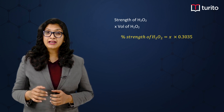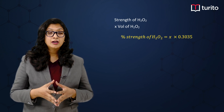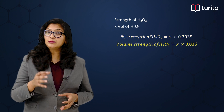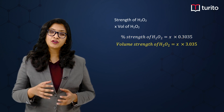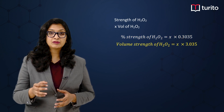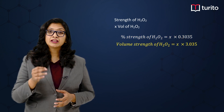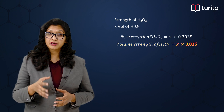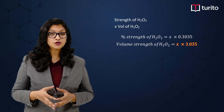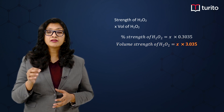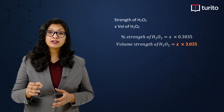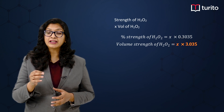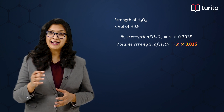Now, when I am having a particular question in which volume strength is being asked, then what we will do? We will multiply the volume of H₂O₂ given in the question with 3.035 and you will finally get the answer.